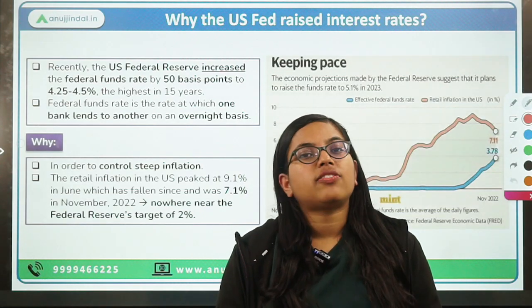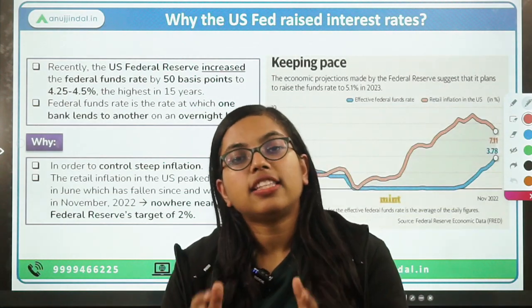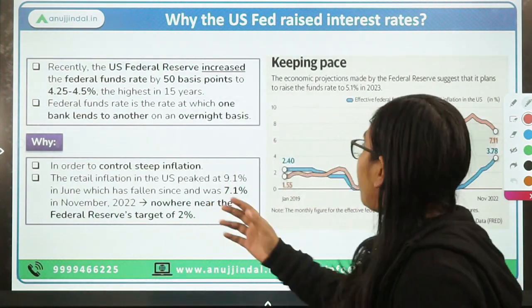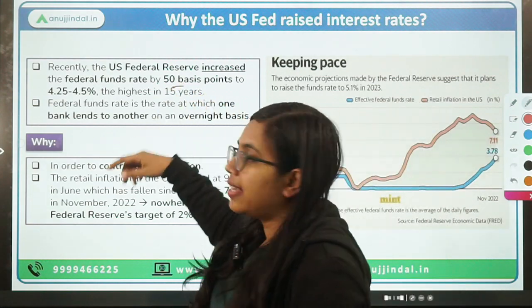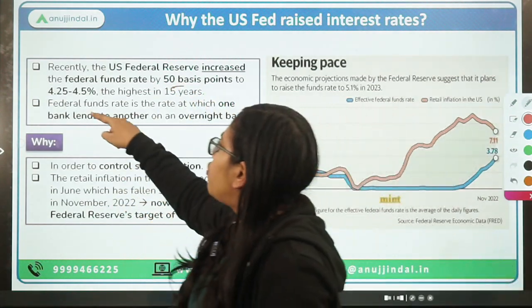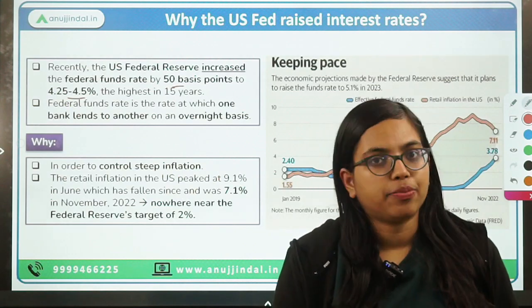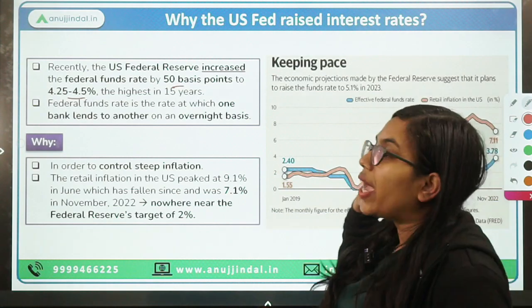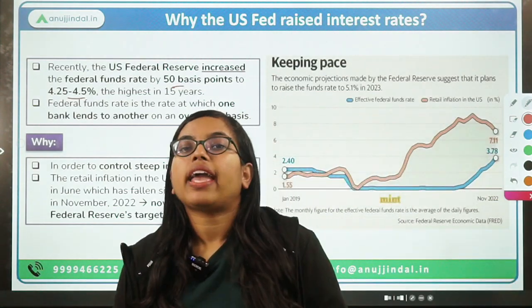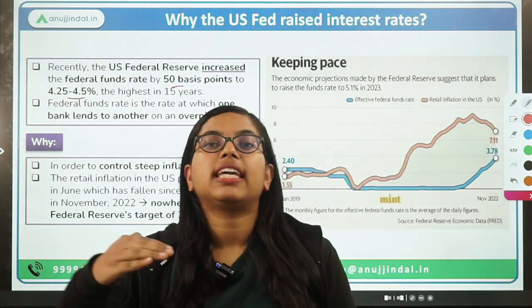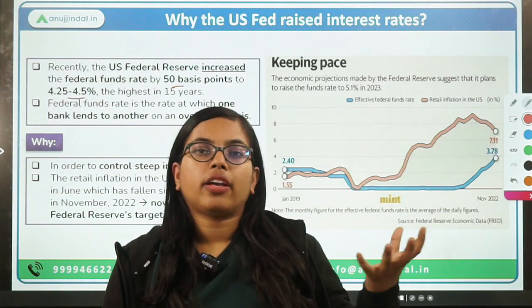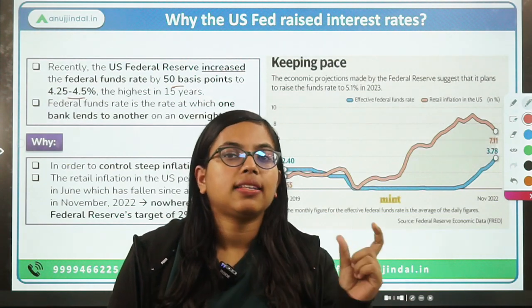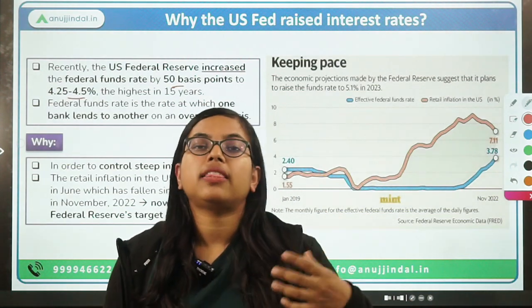The news says that recently the US Federal Reserve has increased its policy rate, that is the federal fund rate, by 50 basis points. The range is now 4.25 to 4.5 percent. We have also seen in the context of India that the Monetary Policy Committee had increased the policy rate, that is the repo rate, by 35 basis points.